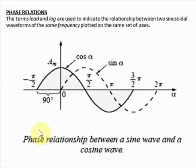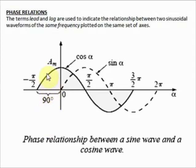When leading or lagging, you just look at the diagram. This cosine wave leads the sine wave by 90 degrees, so you can say they are out of phase by 90 degrees. You can also say the cosine wave leads the sine wave by 90 degrees, or the sine wave lags the cosine wave by 90 degrees. These statements are called the phase relationship.